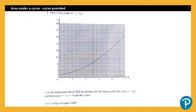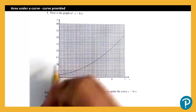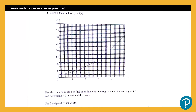Without using the trapezium rule here, you won't gain the credit on the question, and as you can see the question states we should be using the trapezium rule. So we'll read through the question: we've got a graph of y equals f of x. Use the trapezium rule to find an estimate for the region under the curve y equals f of x between x equals one, x equals four, and the x axis, using three strips.